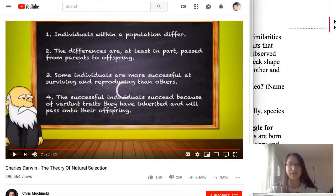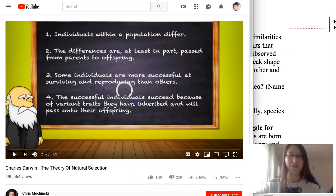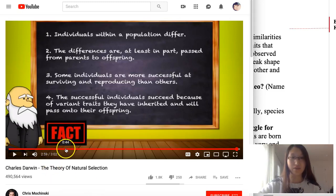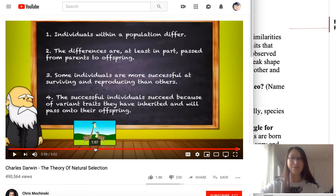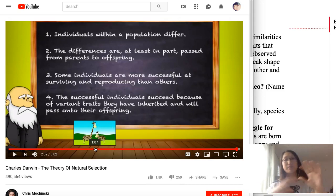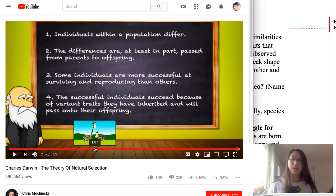From these observations, Darwin came up with four theories. The first is that individuals within a population differ. Looking at the giraffes in this diagram, some are taller and some are shorter. If you look at any type of organism, there will be individuals within a population that are different from each other. Additionally, some of those differences will be passed on to offspring and some won't.